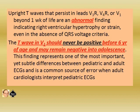Upright T-waves persisting in V3R, V4R, and V1 beyond one week of life are an abnormal finding indicating right ventricular hypertrophy, even in the absence of QRS voltage criteria. The T-wave in V1 should never be positive before six years of age and may remain negative into adolescence. This finding represents one of the most important yet subtle differences between pediatric and adult ECGs and is a common source of error when an adult cardiologist interprets pediatric ECGs.